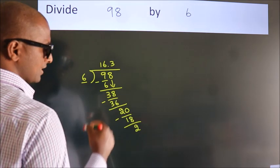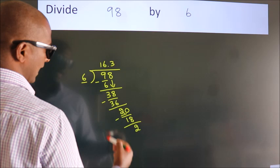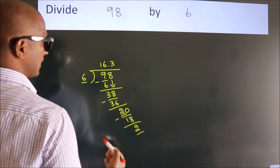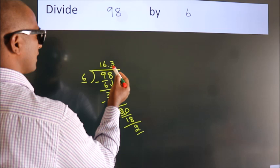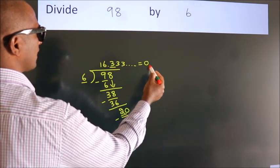Now, observe. We had 2 here and we got 2 again. That means this number keeps on repeating. So, this is our quotient.